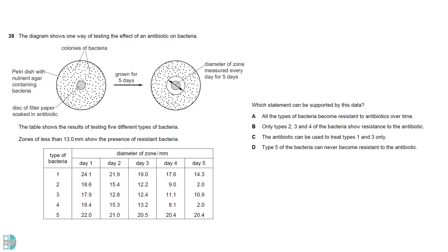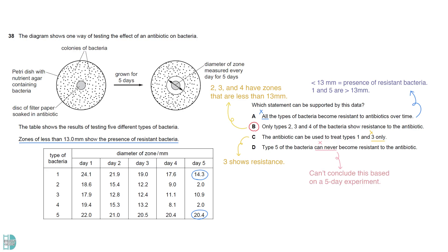A is wrong because zones of less than 13mm show the presence of resistant bacteria, but 1 and 5 are larger than this size. B is correct as 2, 3 and 4 have zones that are less than 13mm. C is wrong as 3 shows resistance. D is incorrect because we can't conclude this based on a 5-day experiment.